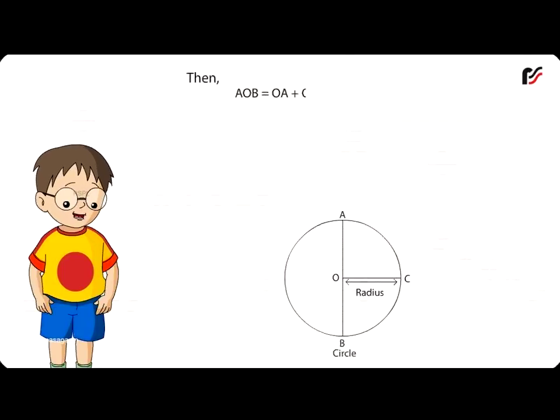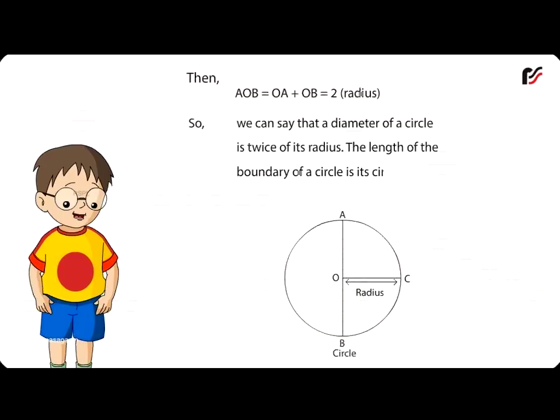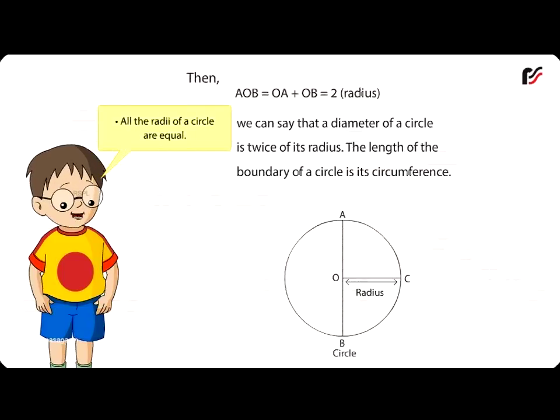Then, AOB = OA + OB = 2 radius. So, we can say that a diameter of a circle is twice its radius. The length of the boundary of a circle is its circumference. Remember, the center of a circle lies in its interior. All the radii of a circle are equal. We can draw as many radii as we want. All the diameters of a circle are equal in length.